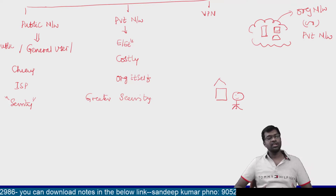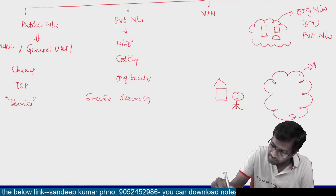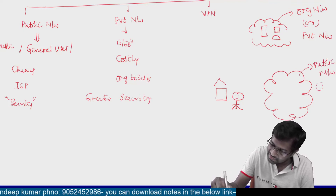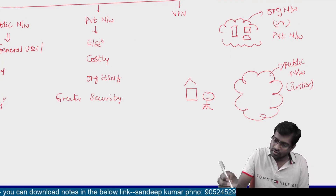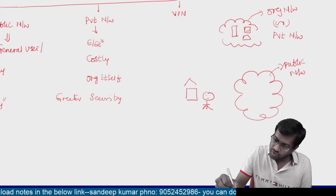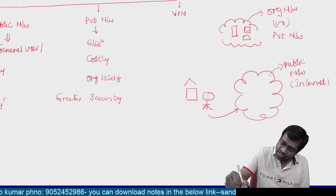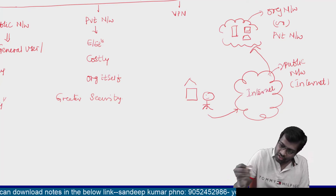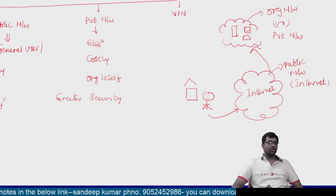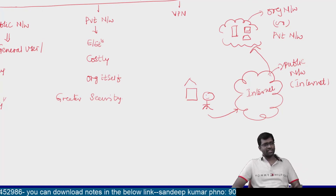That is the reason I use a public network — which we can call the internet. I use the internet to connect into an organization network. This is the same concept as remote access: from a remote area, using a public network (the internet), we can access all the resources in the organization network.